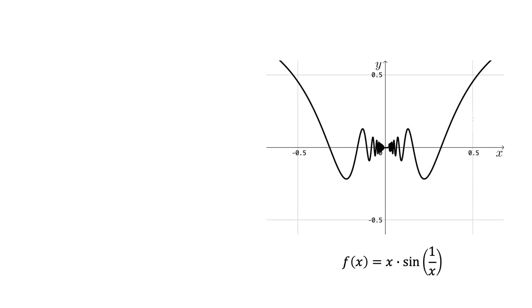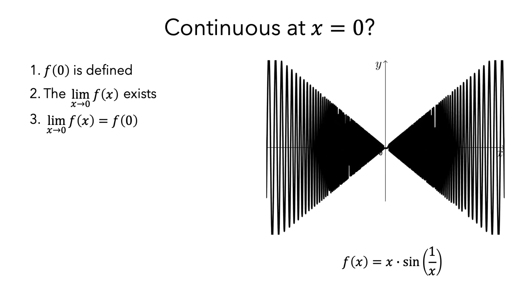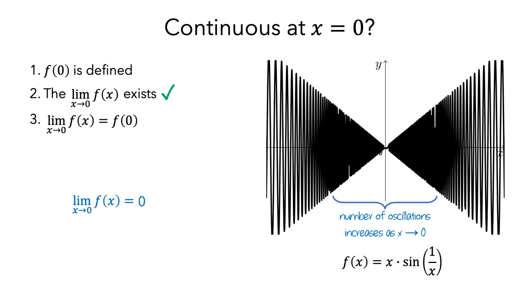Let's look at one more example. Here is a graph of the function x times sine of 1 over x. Pause the video and decide whether this function is continuous at x equals 0. Looking at the graph, it looks like f(0) might be equal to 0, and the limits from both left and right appear to be 0. Taking a closer look at x equals 0, we can see that the number of oscillations increases without bound as x approaches 0. Even though there are infinite oscillations, multiplying by values of x close to 0 has a squeezing effect that allows the limit to exist and equal 0, satisfying the second condition. However, when we look at x equals 0, sine of 1 over x is undefined, so we haven't satisfied the first condition, and this function is not continuous.